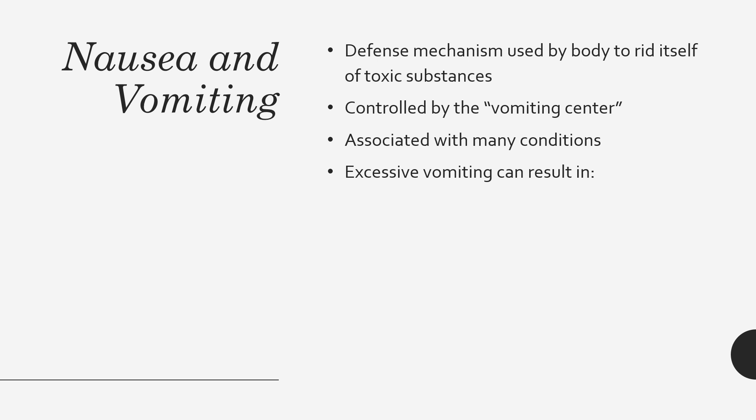Nausea and vomiting — most specifically vomiting — are defense mechanisms that rid the body of toxic substances. The vomiting center is in the medulla of the brain. Many conditions can cause nausea and vomiting, including infectious processes, poisonings, psychological factors, pain, changes in body positioning, or medications. Nausea and vomiting as a side effect of medications is one of the biggest reasons why people stop taking them.